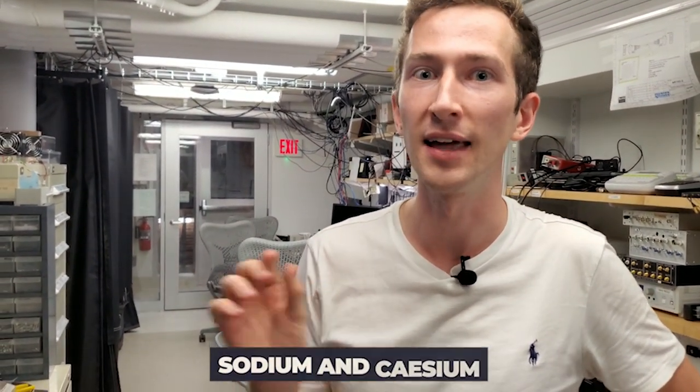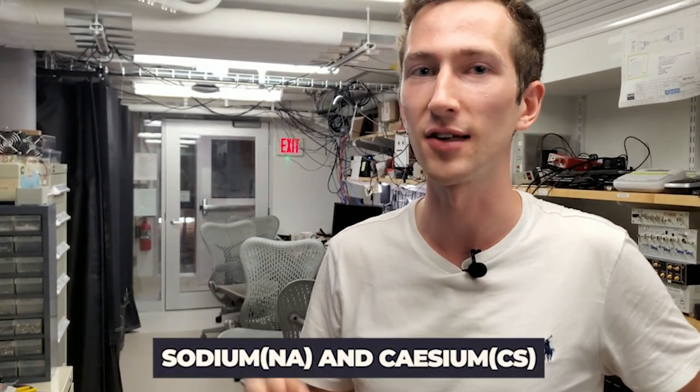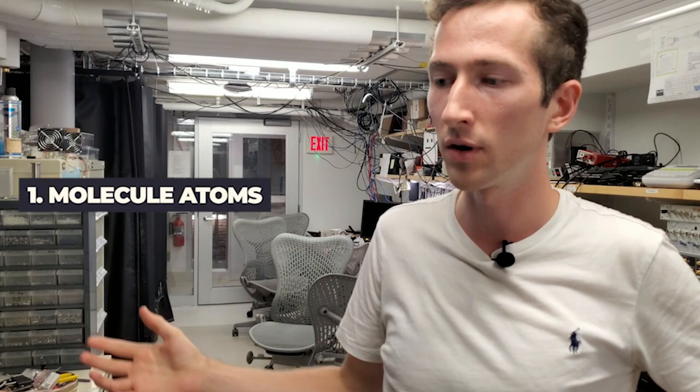The first thing I'm going to explain are two experiments that we do which involve sodium and cesium, so we call them the NACS experiments. In our lab parlance they're called NACS 1.0 and NACS 1.5, and this refers to the sequence in which we built the experimental apparatus. Both of these experiments involve two atoms. One of them is concerned with molecules that we can make from those atoms and the other one is concerned with single atom physics that we can study without building the molecules.